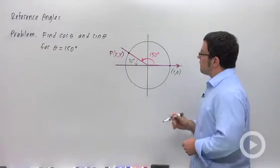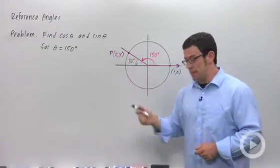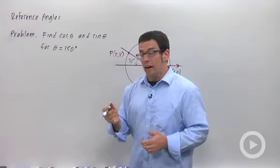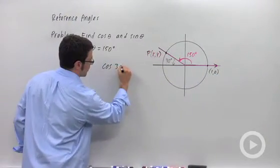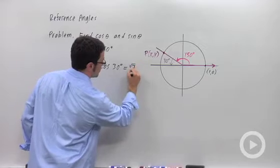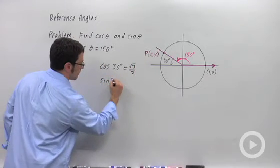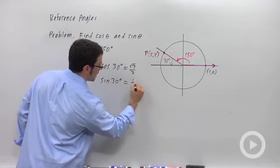And then you need to find the cosine and sine of 30 degrees, which by now we've found. And the cosine of 30 degrees is root 3 over 2. Sine of 30 degrees is 1 half.